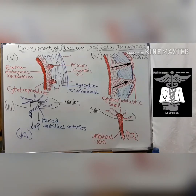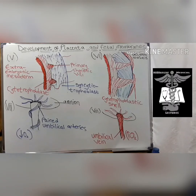The cytotrophoblast from the primary chorionic villi grows towards the decidua basalis, which is the part that develops into the maternal portion of the placenta, to form the cytotrophoblastic shell.